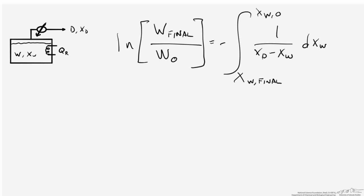In a batch still operation, the compositions of both the distillate product and the composition in the pot still at any given time are going to be varying. So what we need is some relationship that we can use for the material balances in that system over time, and that relationship is the Rayleigh equation shown here on the right.